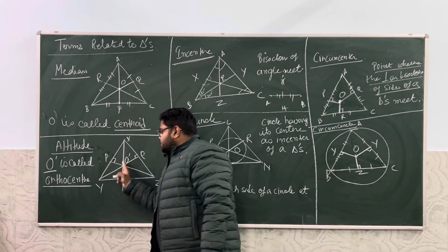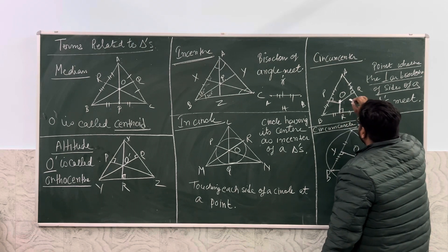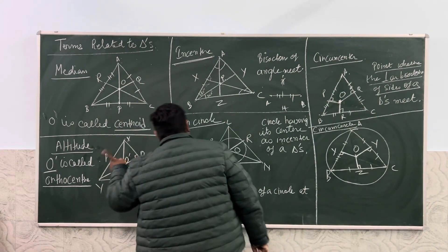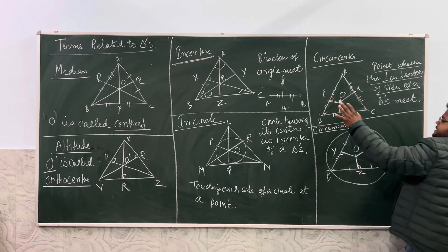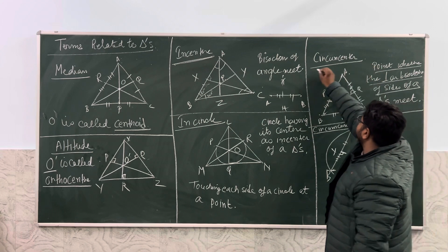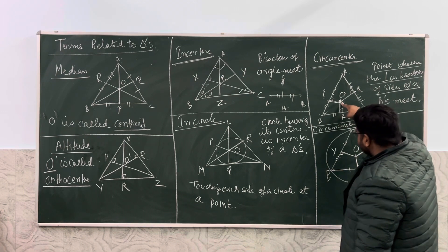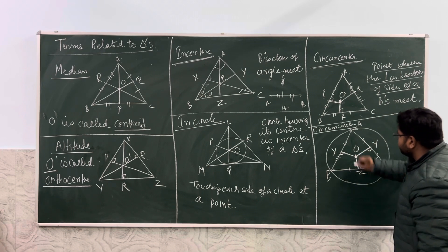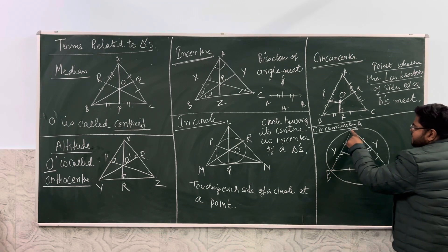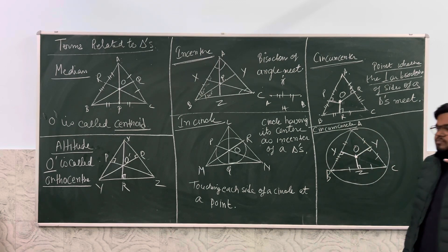The orthocenter is where the altitudes meet — altitude is only 90 degrees. For the circumcenter, the perpendicular bisectors of the sides are drawn. Point P becomes the midpoint of BC, Q becomes the midpoint of AC. In the circumcenter, these are the midpoints, and where these three lines intersect, that point is called the circumcenter. A circle drawn with the circumcenter O as its centre, touching each vertex of the triangle at A, B, and C — meaning the triangle is inside the circle — is called the circumcircle of the triangle.